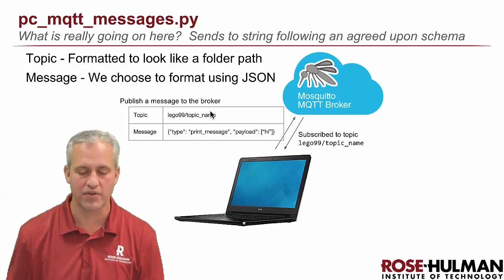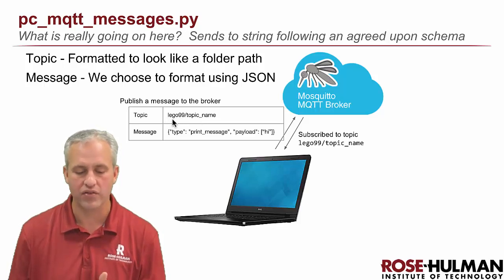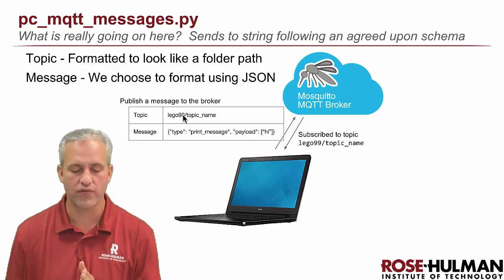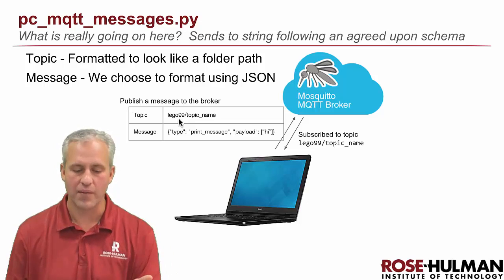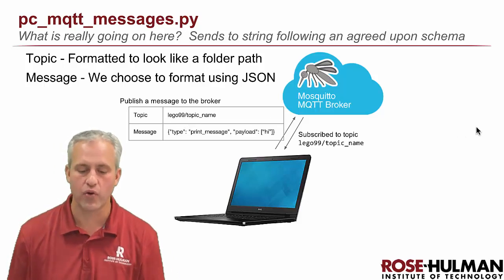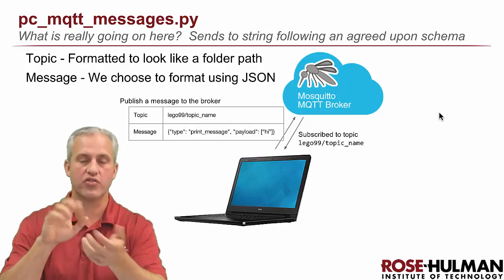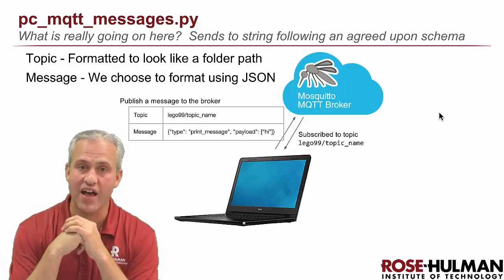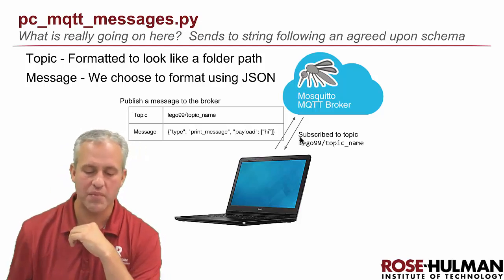Topics are always formatted to look like folder paths. The way we're going to use it in class, the first part of the folder path is the Lego number — like Lego 01, Lego 02, here Lego 99 — then a slash, which is just how they're typically formatted, and then whatever topic name you want to publish this message to. Usually the topic name is not literally the words 'topic name,' but here it is. The next thing you send is a message, and the message is always a string.